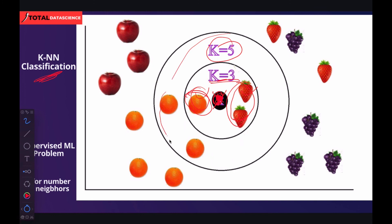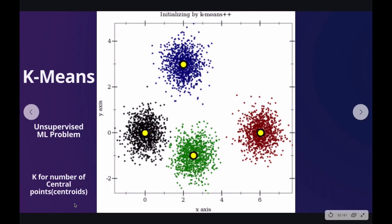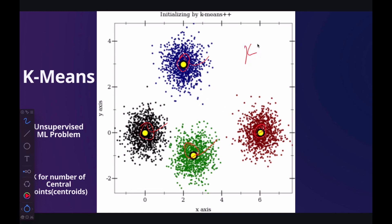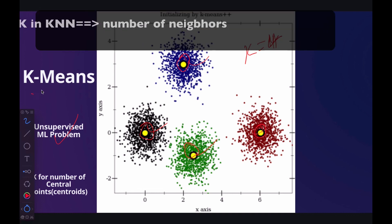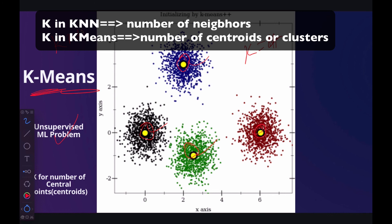With k equals 5 we now have 5 neighbors in the wider circle. That's for k-nearest neighbor — used in supervised machine learning. Now looking at the k-means image: the k represents the various centroids we have, where we associate the various data points. In this example we have 4 central points or centroids, so our k equals 4. We use k-means in unsupervised machine learning problems.